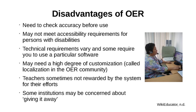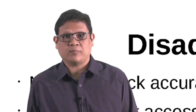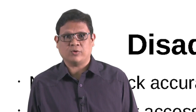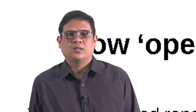What are the disadvantages of OER? First, we need to check the accuracy of OER before use — in the past we relied on the reputation of the publisher, but now we must verify accuracy ourselves. Some OERs may not meet accessibility requirements for persons with disabilities, and some have varying technical requirements or require particular software. Some may need a high degree of customization — called localization in the OER community. Additionally, teachers who make OER may not be rewarded by the system for their efforts, and some institutions may be concerned about giving content away.